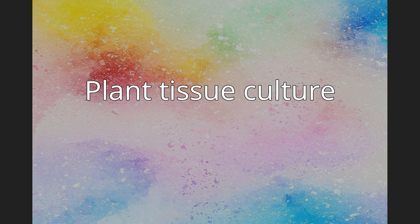Callus formation is often used as a first step in micropropagation, where the callus cells are then caused to form other tissues, such as roots, by exposing them to certain hormones like auxins. The process of callus to root formation is called indirect organogenesis, whereas if roots are formed from the explant directly, it is called direct organogenesis.